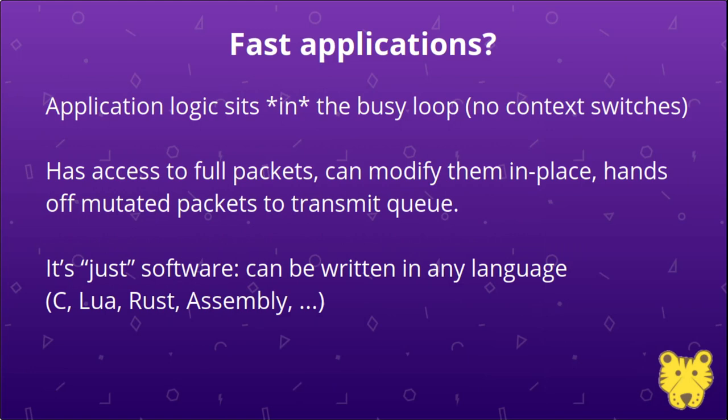Once we set that up, we enter a busy loop where we poll the device for new packets and write to the transmit and receive queues of the device. These transmit and receive rings managed by the device are filled with pointers to packets in our DMA memory. Your application logic can now sit in that busy loop — you don't need any context switches between the device driver and your application. For modern CPUs, your caches will stay loaded with the things you're actually working on.